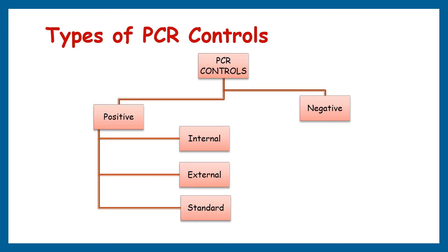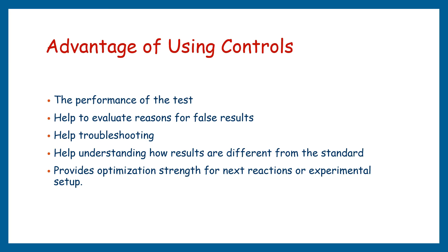PCR commonly has two types of controls: positive and negative controls. The positive control can be subdivided into internal control, external control, and standard controls. Positive, negative, and internal controls are used to validate the results and confirm whether the reaction occurred correctly. Using more controls gives more data for future optimizations and helps in deciding what to do or what not to do next.